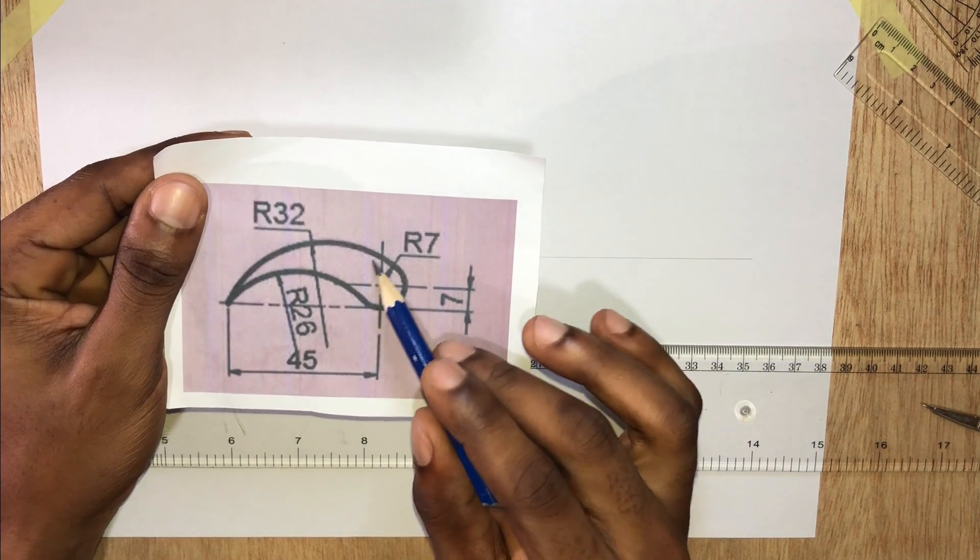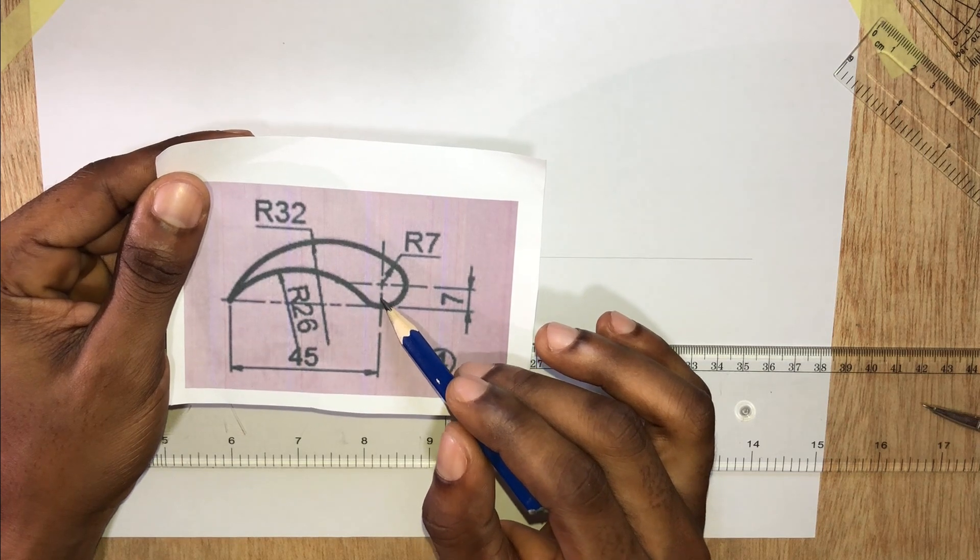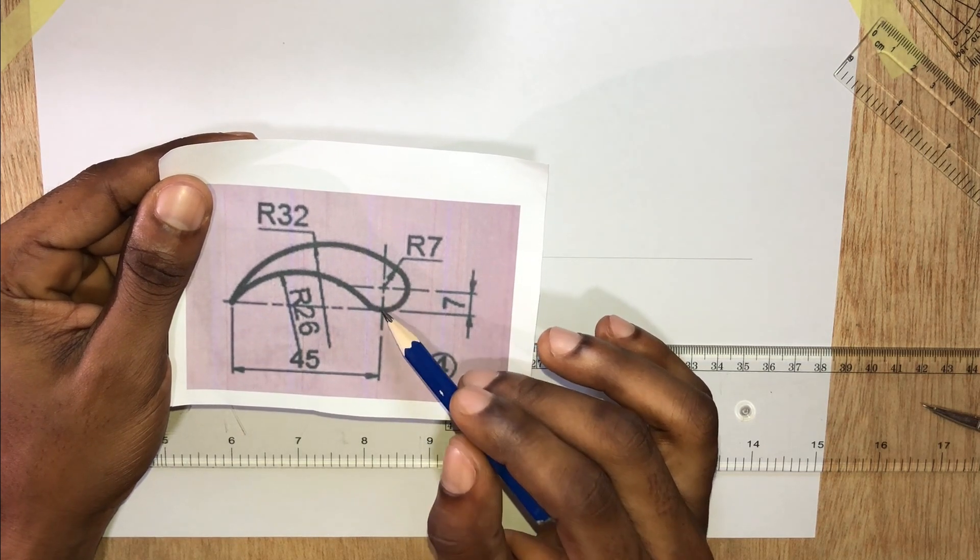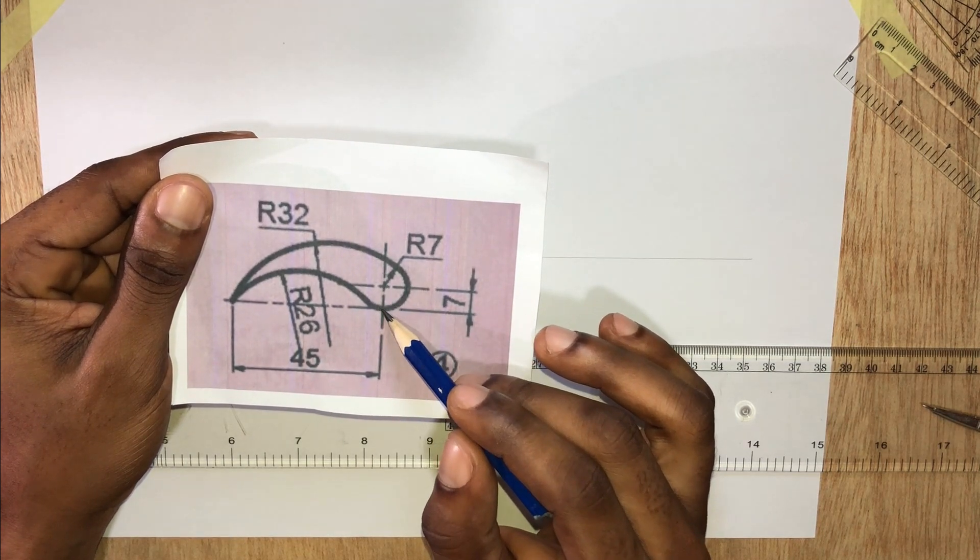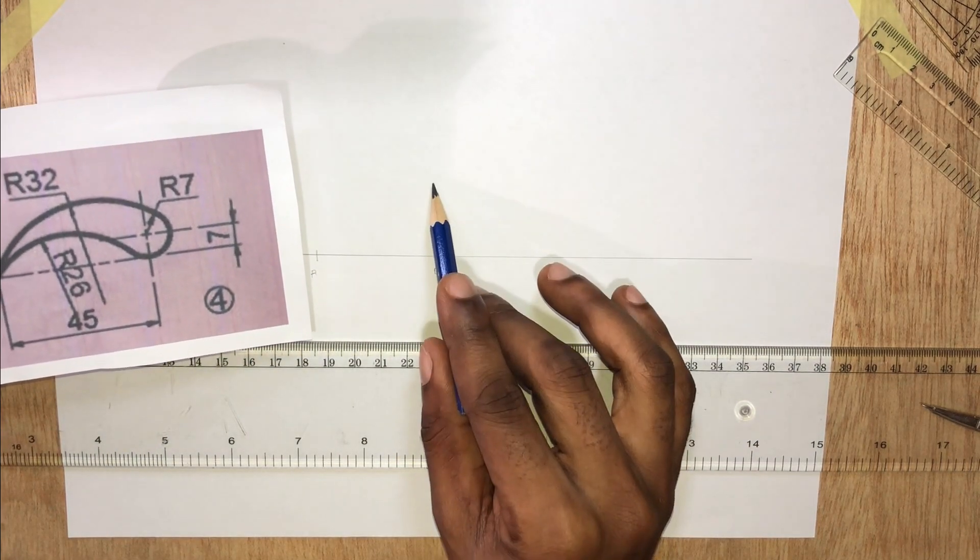Before we draw this circle, we need to project point B upwards, because the center is not on this line. We need to project a line upward.